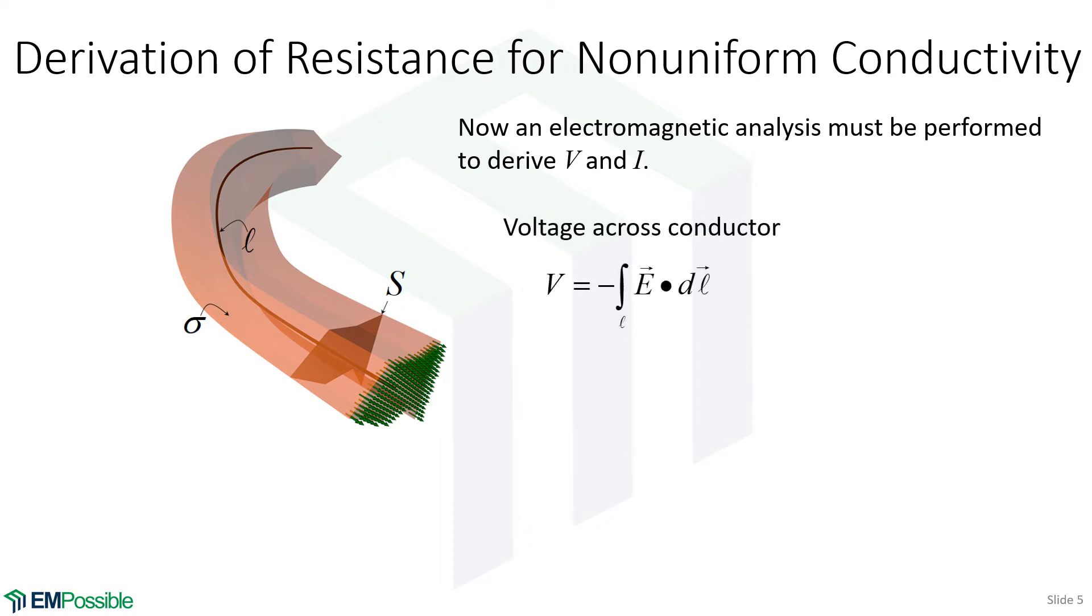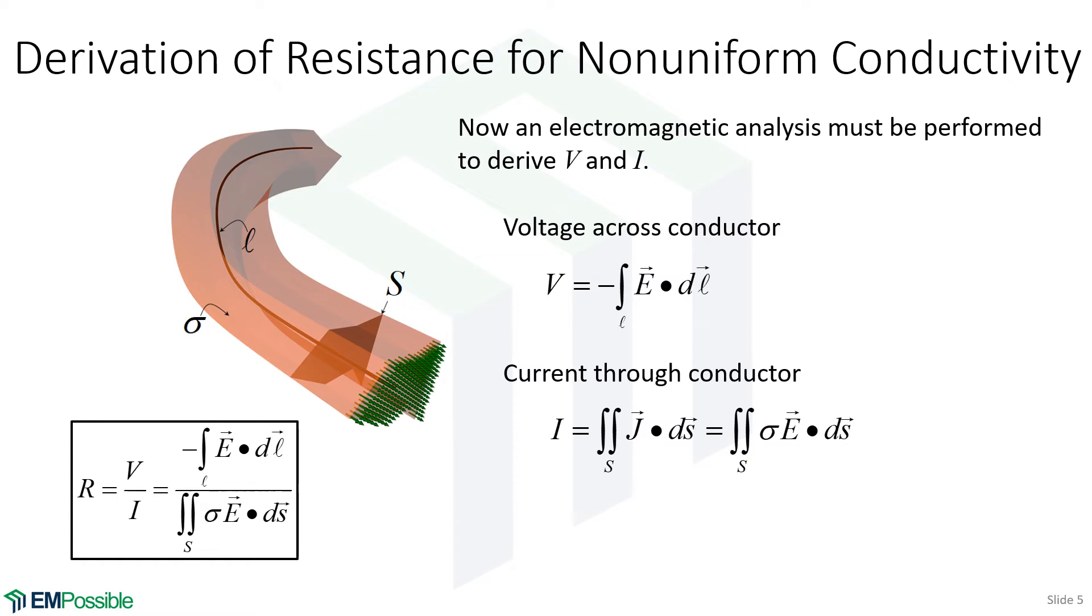So the voltage across the conductor, well, we would use a line integral of the electric field intensity. The current through the conductor, we would integrate the electric current density. And so the resistance, V over I, is simply these two integrations divided by each other.